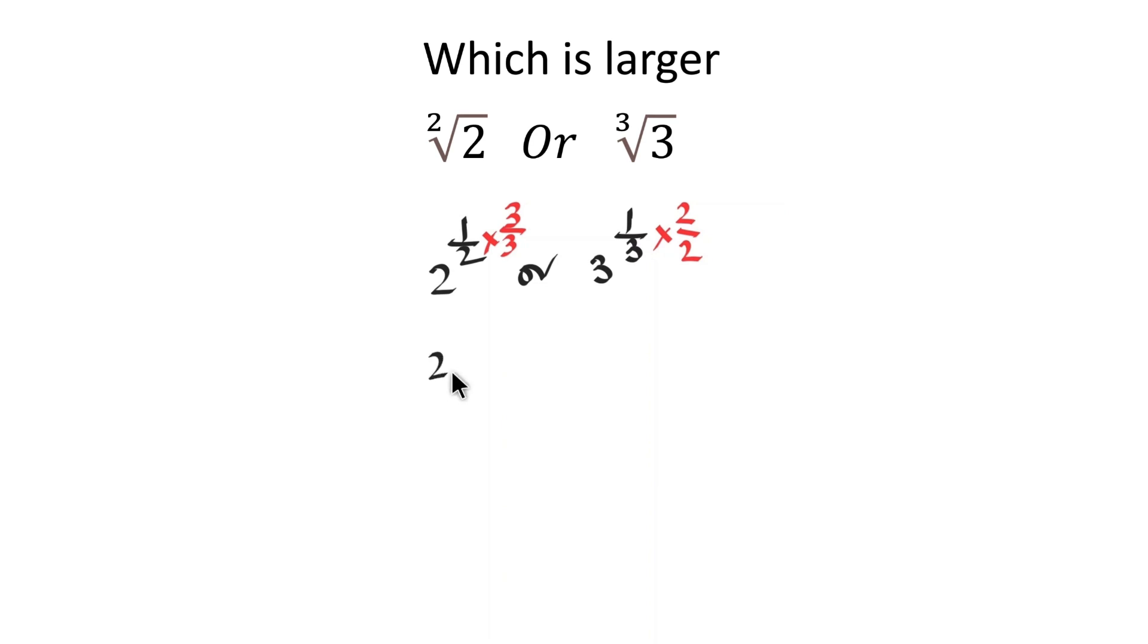That is, 2 to the power 1 times 3, which is 3, times the denominator 1 over 3, giving 1 over 6. And 3 to the power 2 times 1, which is 2, multiplied by denominator 2 times 3, which is 1 over 6.